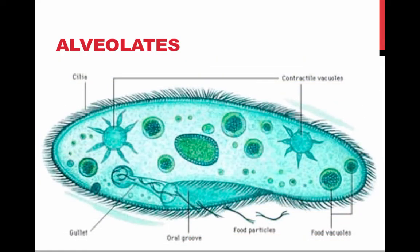Ciliates are a large, varied group of protists, named for their use of cilia to move and feed. The most famous ciliate is the paramecium.